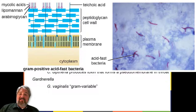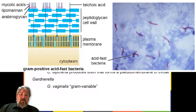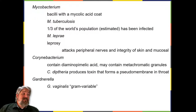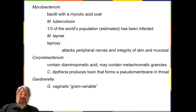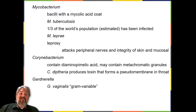The genus Mycobacterium is represented by bacilli covered with a mycolic acid coat. This waxy coat protects the bacteria from some antibiotics, prevents them from drying out, and blocks penetration by Gram-stain reagents. Because of this, a special acid-fast staining procedure is used to visualize these bacteria. Mycobacterium tuberculosis is the causative agent of tuberculosis, a disease that primarily impacts the lungs but can infect other parts of the body as well.